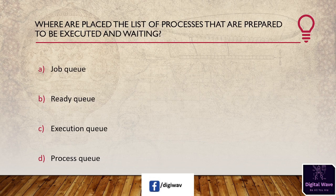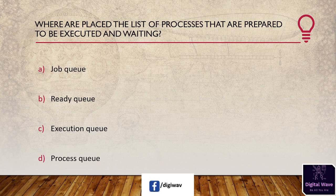Next question: where are placed the list of processes that are prepared to be executed and waiting? Options: job queue, ready queue, execution queue, process queue. The right answer is ready queue. The ready queue is a set of all the processes that are ready to execute and wait.